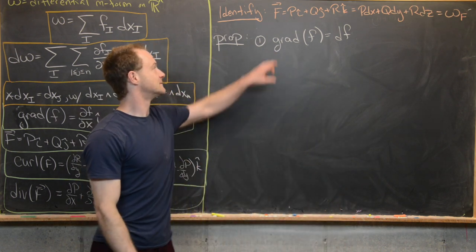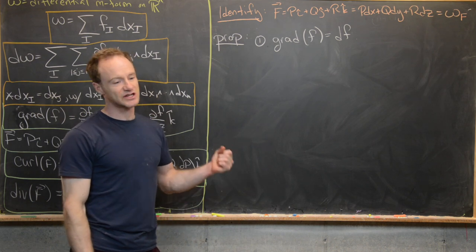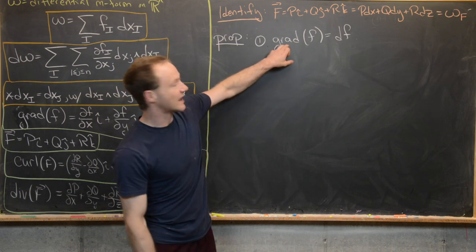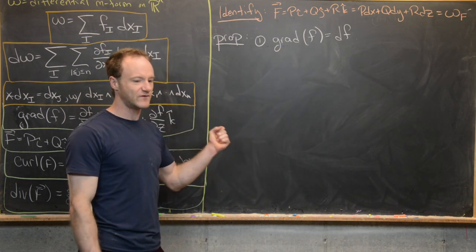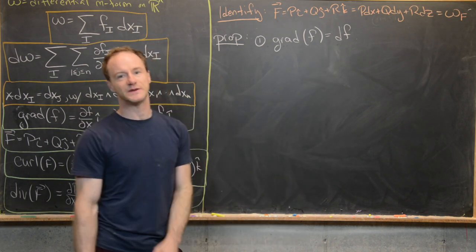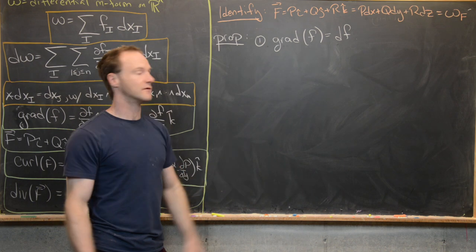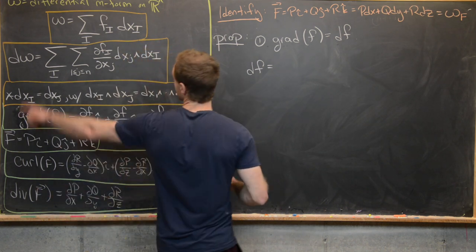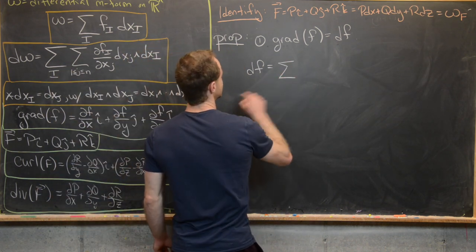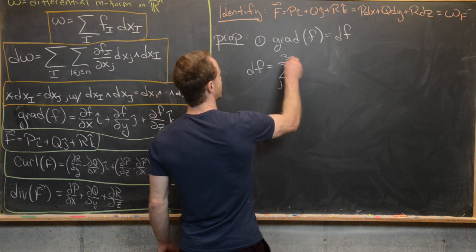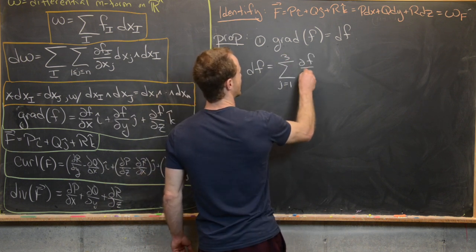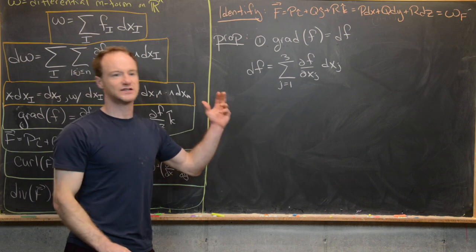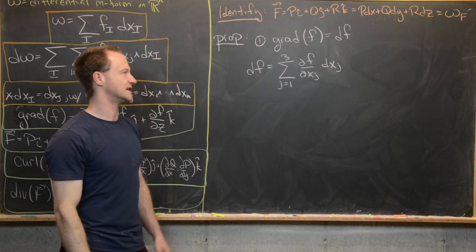The first thing we want to look at is that the gradient of f is just the exterior derivative on a zero-form. Functions can also be seen as differential zero-forms. So let's see: df means, using our definition, we sum from j = 1 to 3 of the partial of f with respect to x_j, then dx_j, wedged into the zero-form — but that's just 1, so we just end up with dx_j.